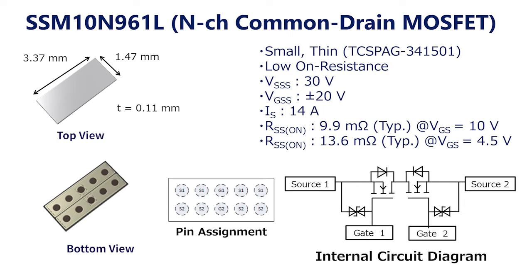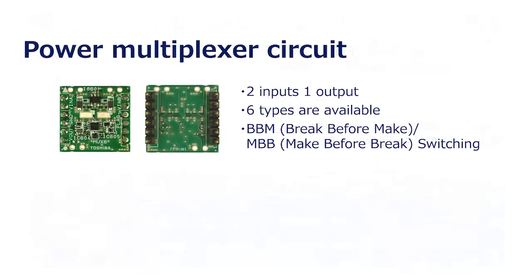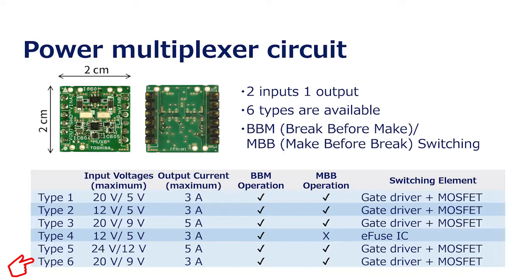This SSM10N961L MOSFET is used in a two-input, one-output power multiplexer circuit. The board size is 2 centimeters square, which makes it very compact. By using the MOSFET gate driver it is possible to switch between BBM and MBB operation. Type 6 has been added to the 5 multiplexer circuits developed previously, resulting in 6 power multiplexer circuits with different input voltages and output currents.